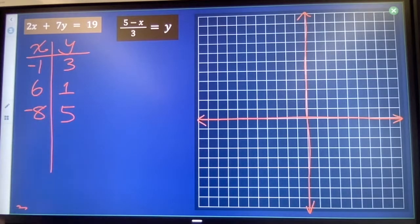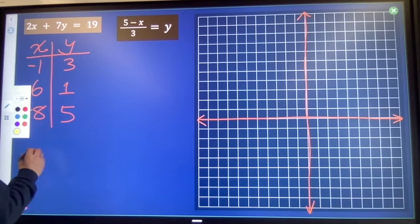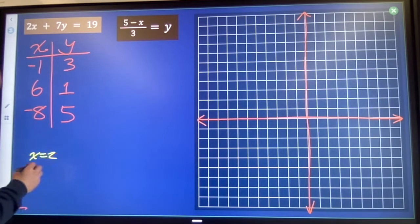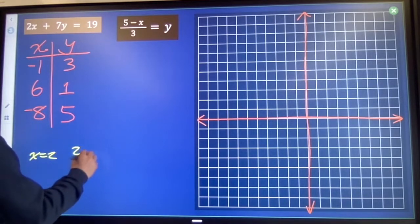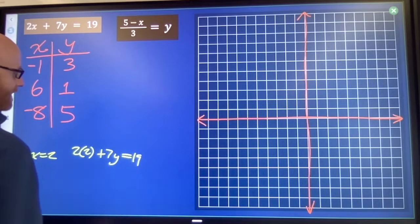You don't have to use that process. You can use a process like this if it is safer for you. Say you pick your x value. x is 2. When x is 2, 2 times 2 is 4, plus 7 of something equals 19.